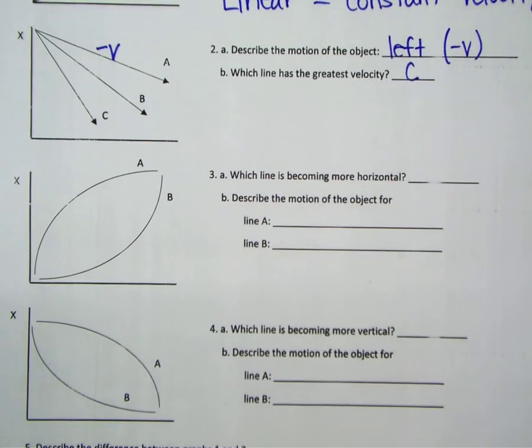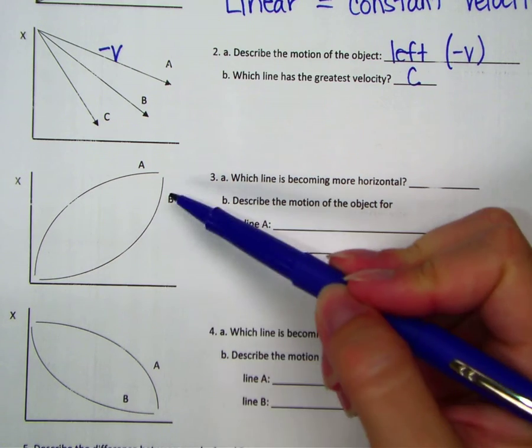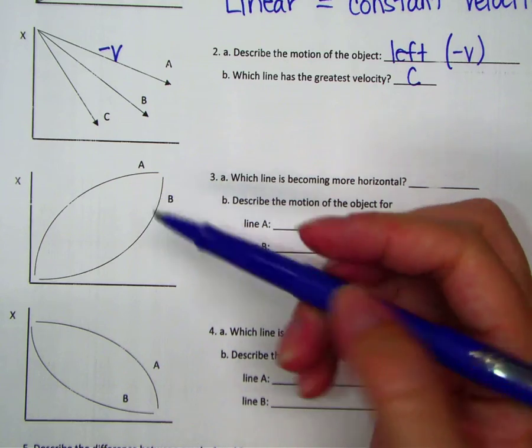When you get to a nonlinear and exponential, then you have acceleration. So in this picture, the direction of motion is still determined by the slope. Right?